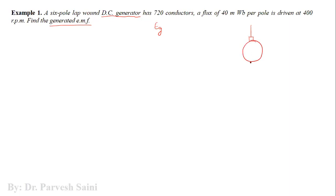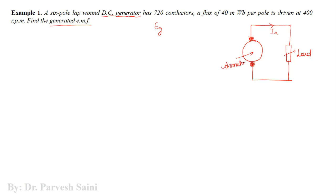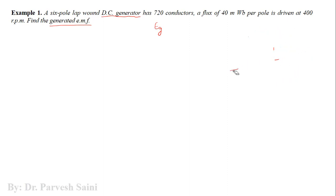As we have already discussed in our previous lectures, this is a symbolic representation of a DC generator. The current direction is outward, and we connect a load. The armature is the rotating part, and these are the brushes.